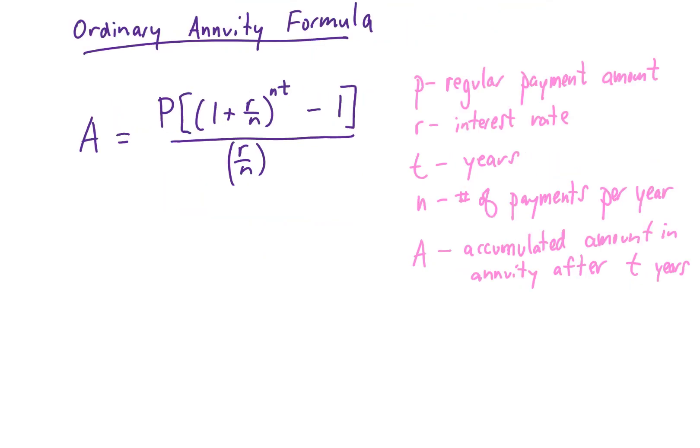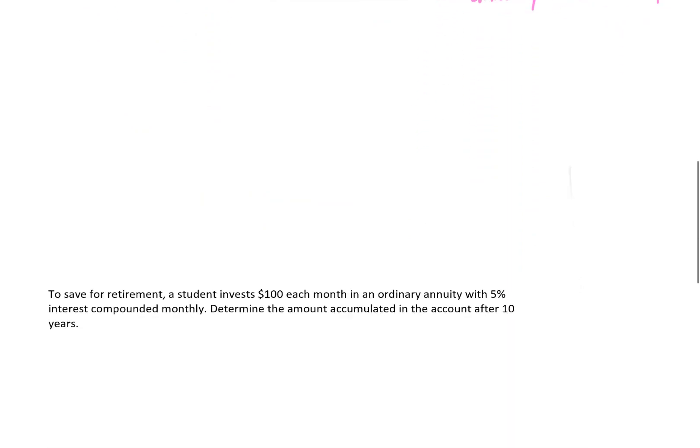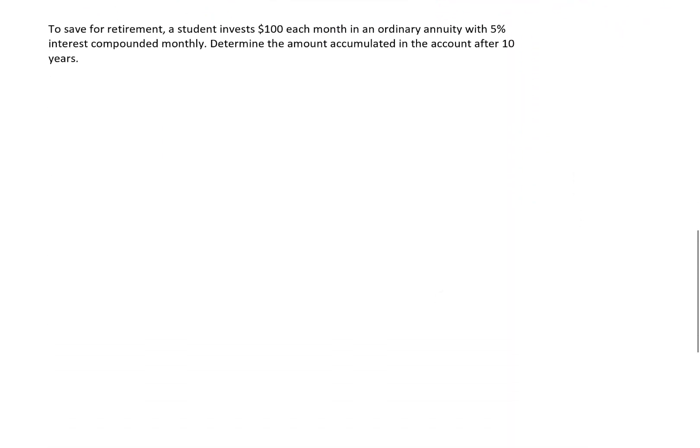All right, and I think right now would be a good time to try our first problem. To save for retirement, a student invests $100 each month in an ordinary annuity with a 5% interest rate compounded monthly. Determine the amount accumulated in the account after 10 years.